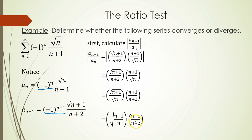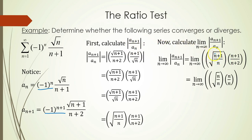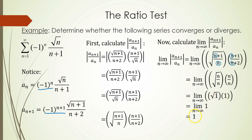We now take the limit as n goes to infinity of this ratio — the square root of n plus 1 over n, times n plus 1 over n plus 2. When taking infinite limits, I go under the square root and pick the highest power terms from the top and bottom. That gives square root of n over n for the first grouping, and n over n for the second. This simplifies to the square root of 1 times 1, which equals 1. So the limit as n goes to infinity is 1.